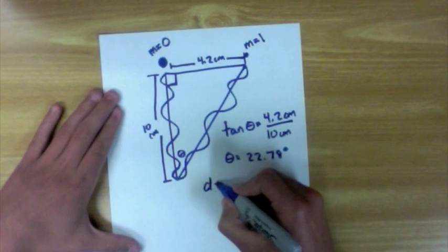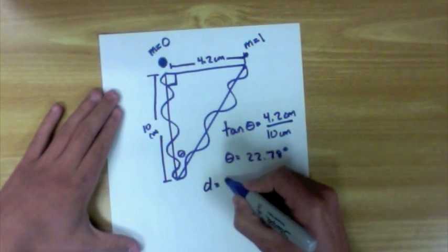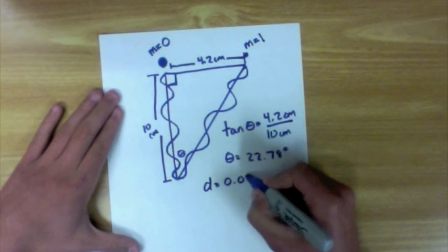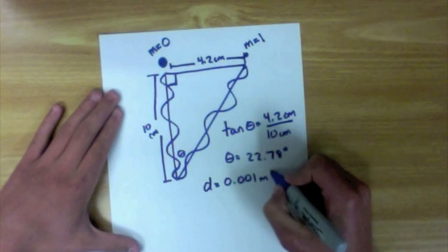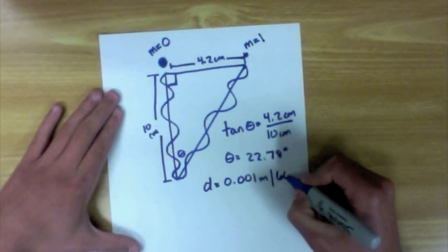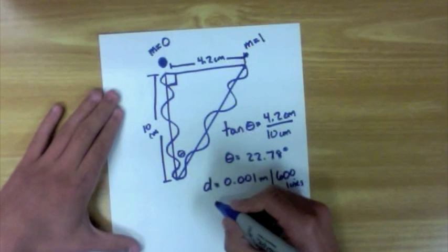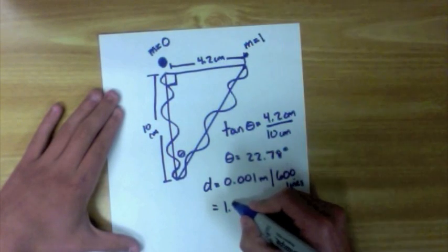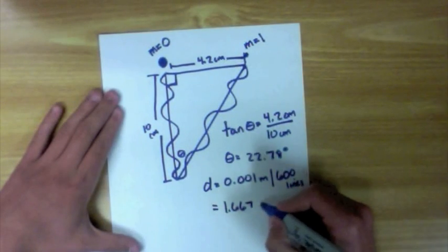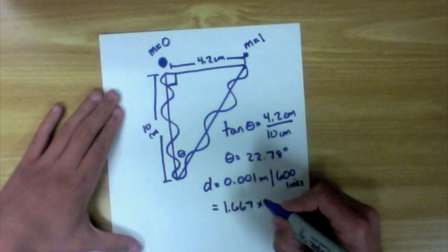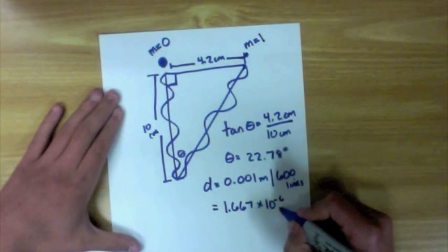We then have to find d. The diffraction grating tells us that there are 600 lines for every 0.001 meters. Therefore, there are 1.667 times 10 to the negative 6 meters between each slit.